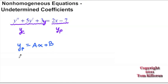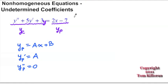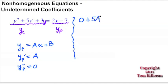If this is my guess, then y prime of p would just be a, and y double prime of p would just be 0. So if we substitute this into y double prime plus 5y prime plus 3y, equal to 2x minus 7, we should be able to figure out what a and b would be appropriate. So y double prime would be 0, plus 5y prime would be 5 times a, plus 3 times y would be 3 times the original guess of ax plus b, and this equals 2x minus 7.